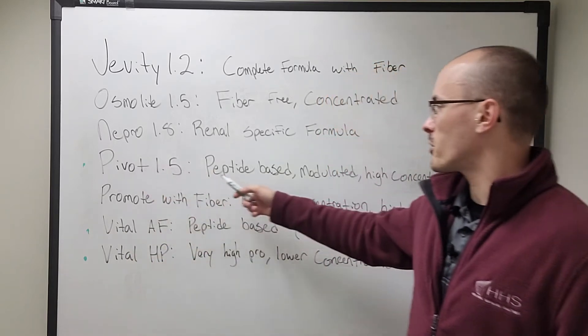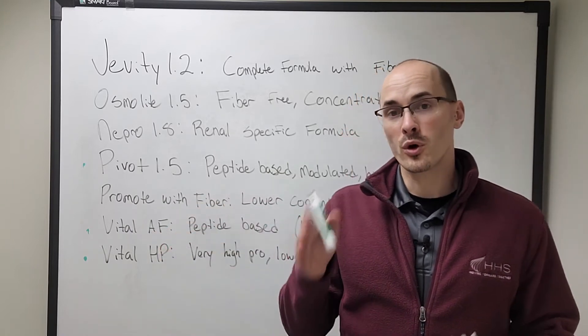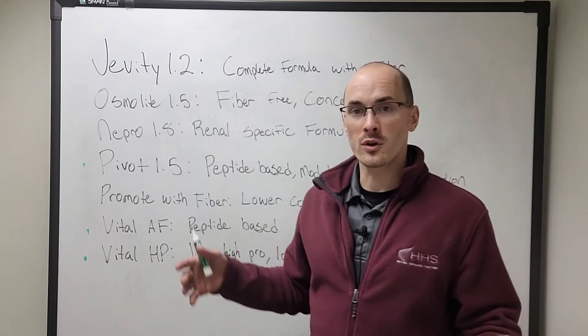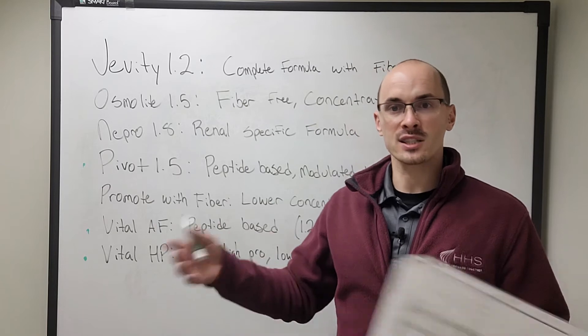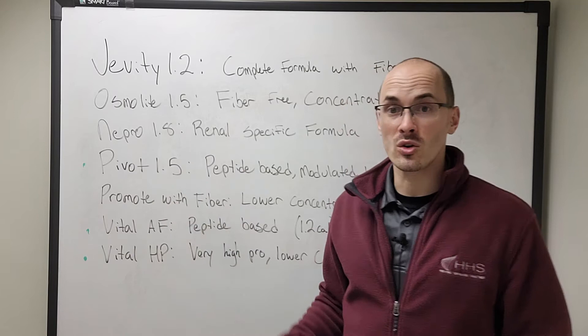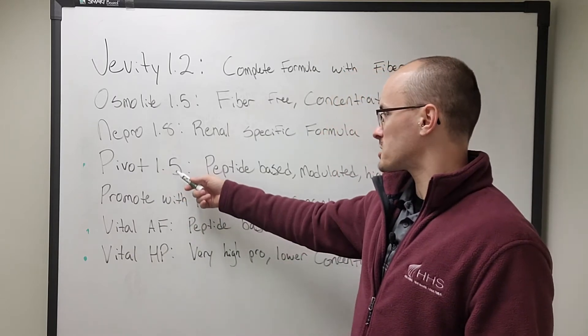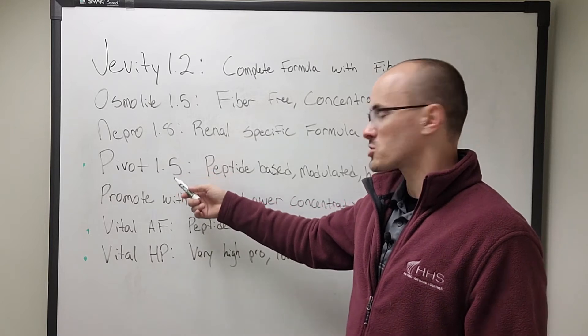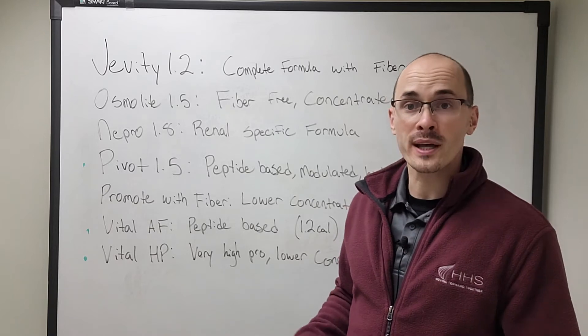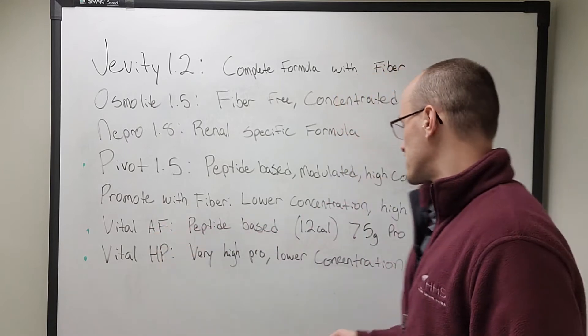Now our Pivot 1.5 and our Vital AF have the same protein to calorie ratio. So whatever patient you have, if they have X amount of calories and X amount of protein, these formulas are going to be identical in terms of being able to provide that. However, Pivot is just more concentrated and it has some extra ingredients in it that are specific for surgical patients that Vital AF does not have.